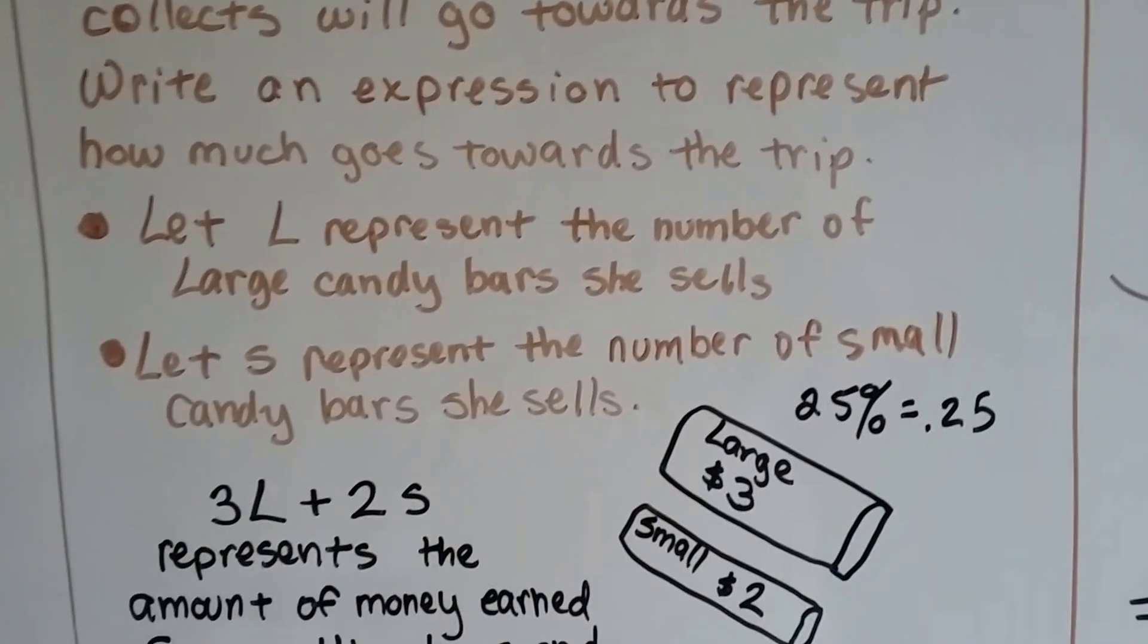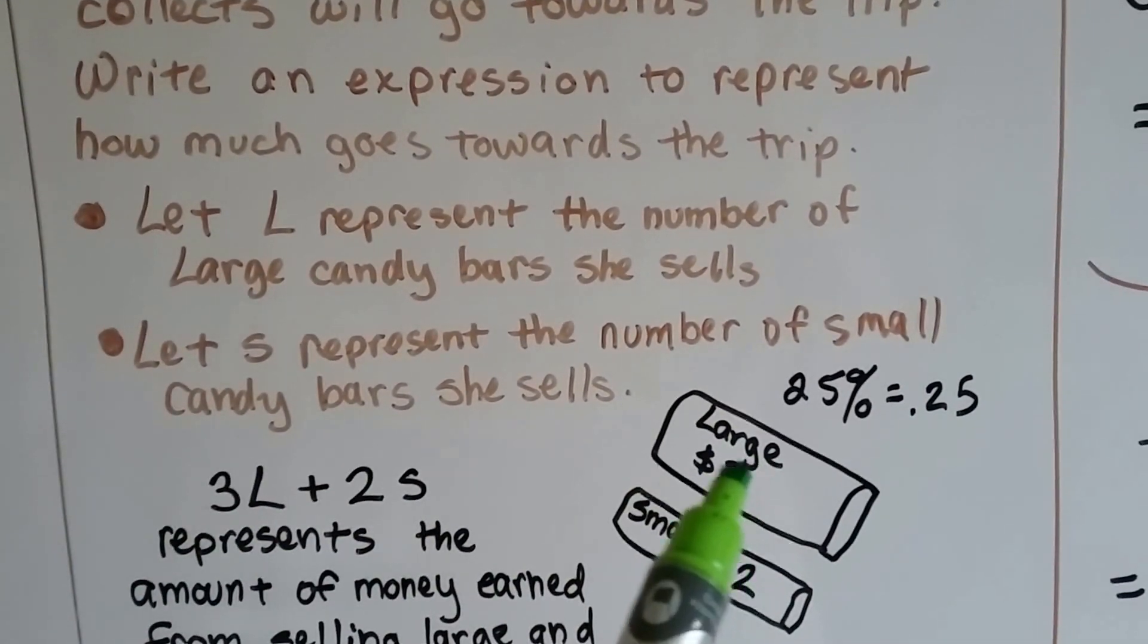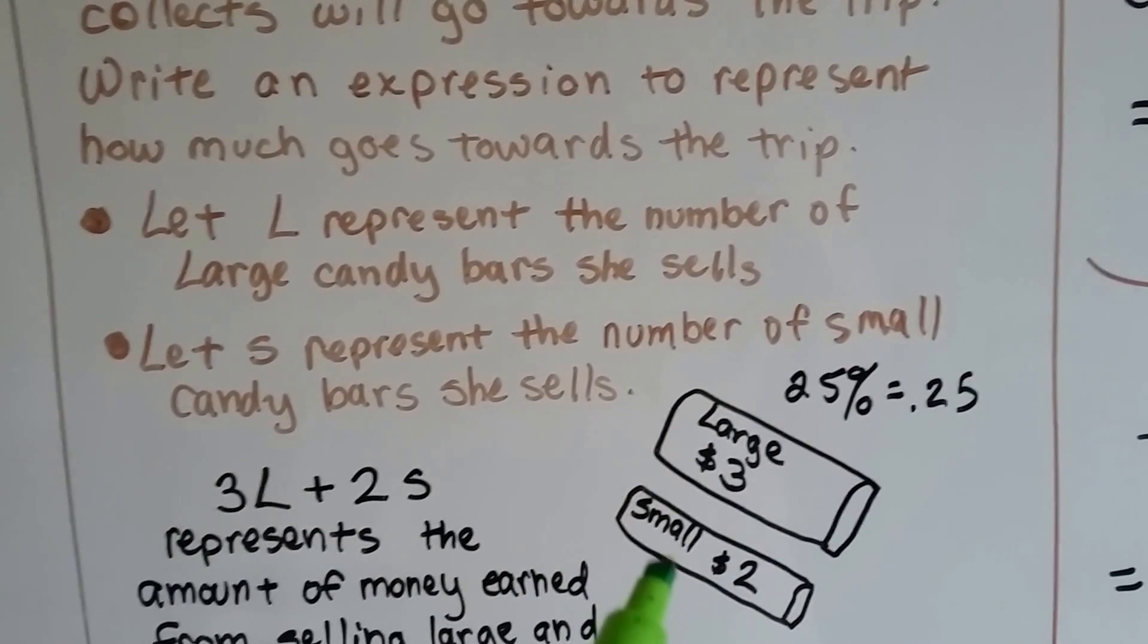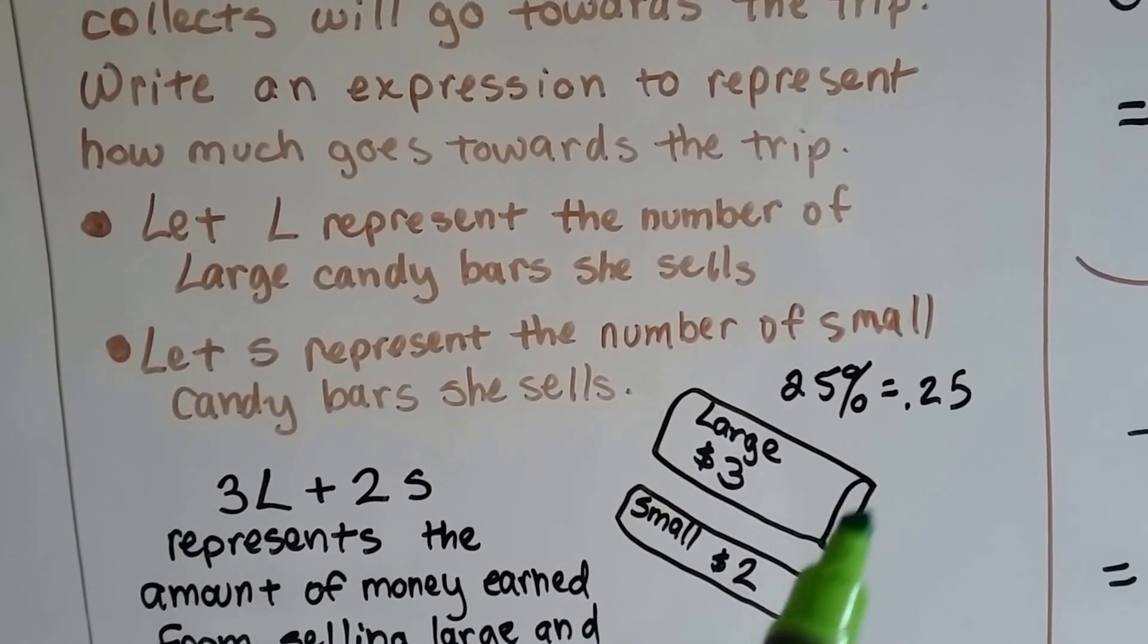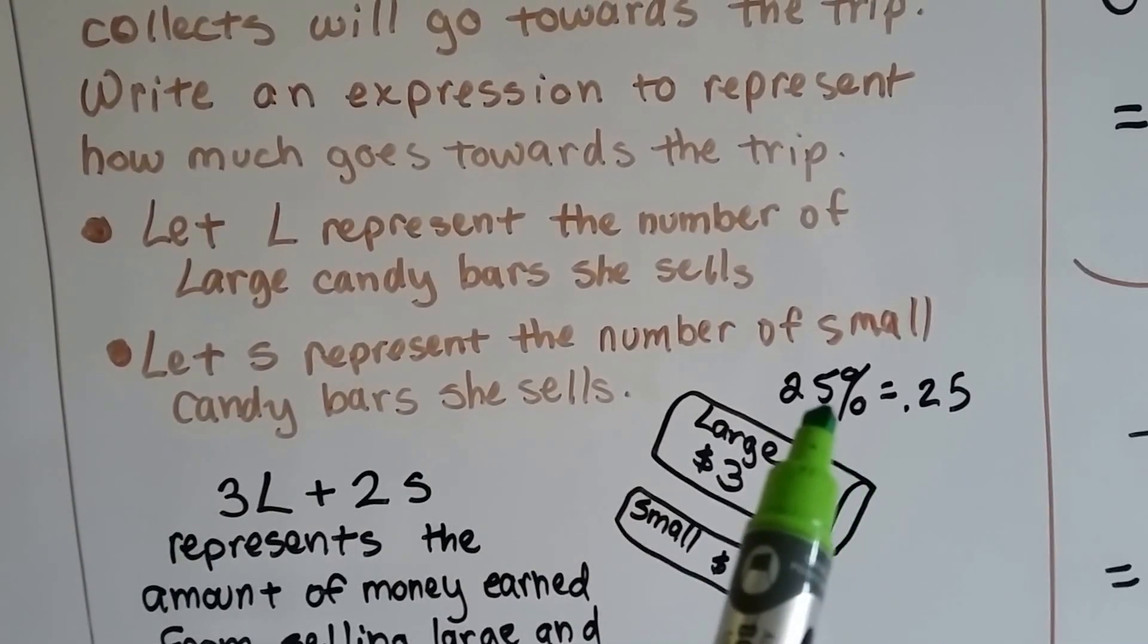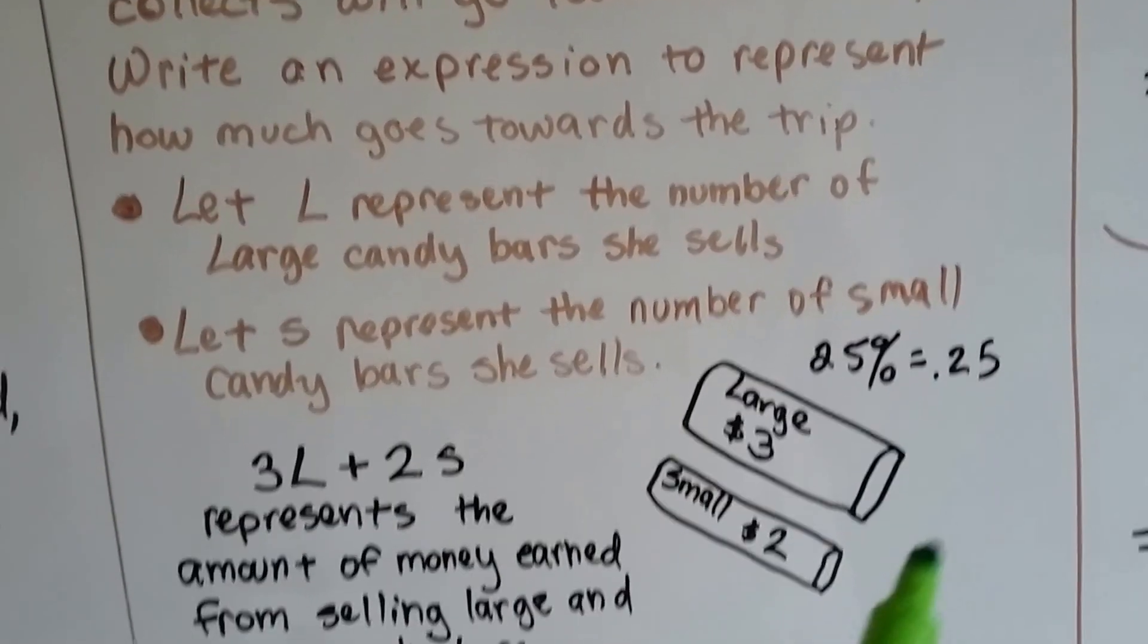We're going to let L represent the number of large candy bars she sells. I'm going to let S represent the number of small candy bars she sells. And she gets 25% of the sales. 25% is .25 in decimal form.